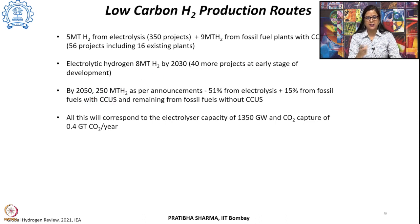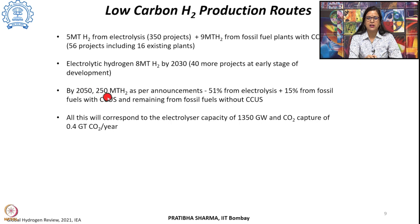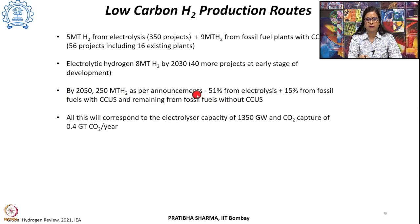Based on pledges, strategies, road maps, and announcements from various countries in the clean hydrogen production scenario, by 2050 it is expected that 250 million tons of hydrogen will be produced. Of that, 51% will come from electrolysis and 15% from fossil fuel plants integrated with CCUS; the rest will come from plants not integrated with carbon capture. This would require electrolyzer capacity of 1,350 gigawatts and carbon capture integration of 0.4 gigatons of CO₂ per year.